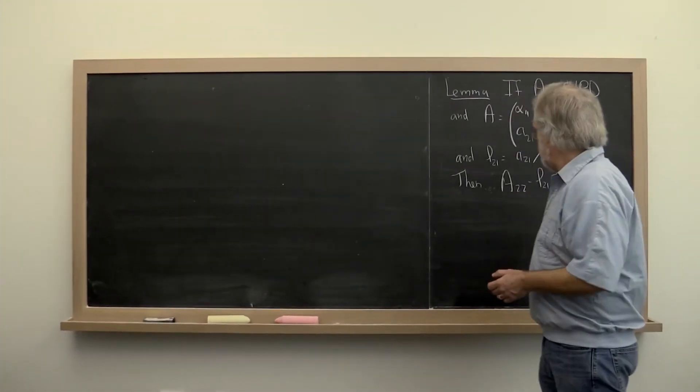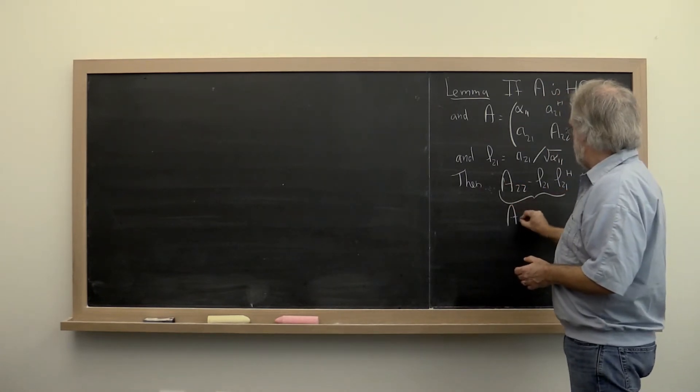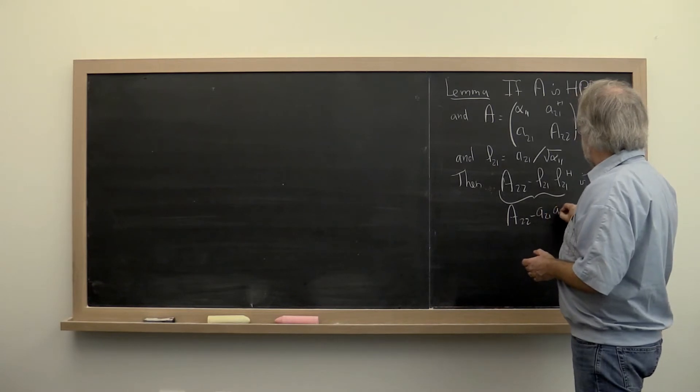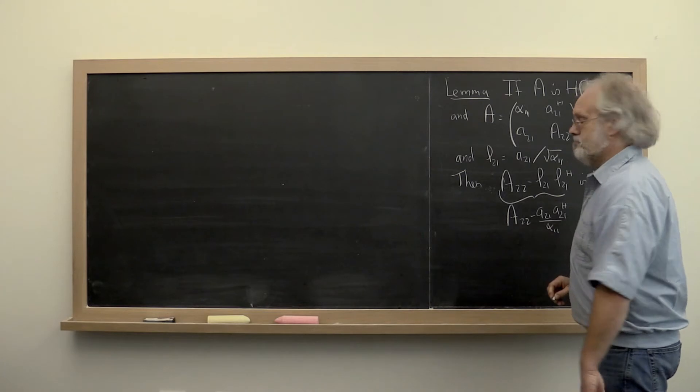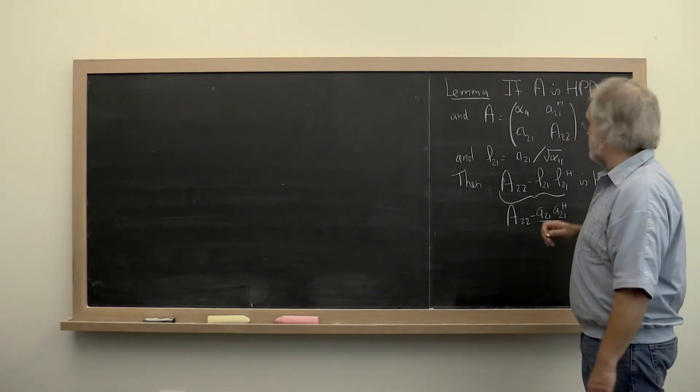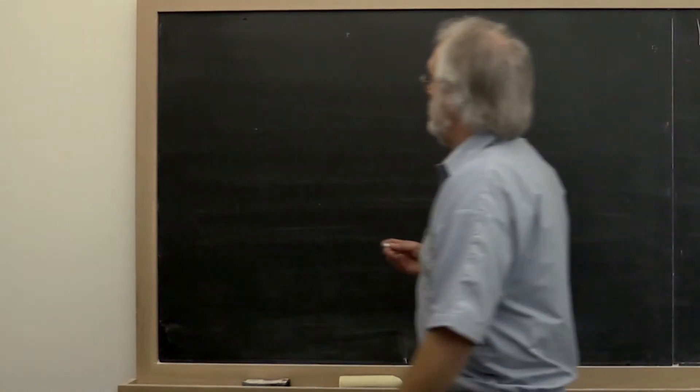So before we do this proof, let's just notice that this is just A 2 2 minus A 2 1 A 2 1 Hermitian transpose divided by alpha 1 1. So we need to prove that that's Hermitian positive definite.